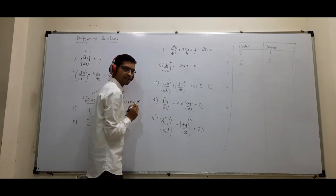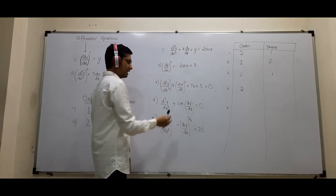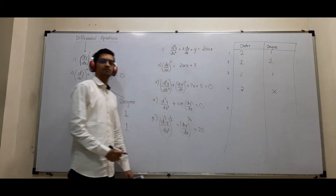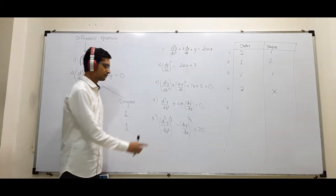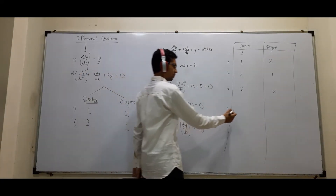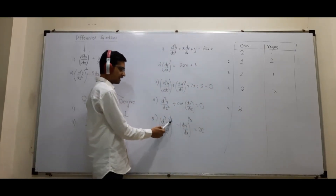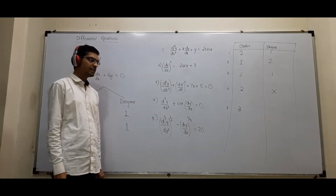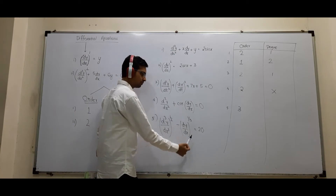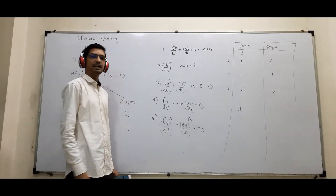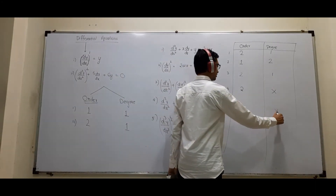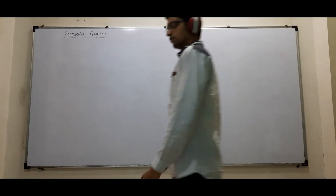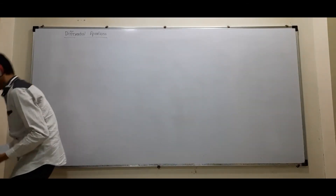In the fourth problem, the highest derivative is the second derivative so order = 2, but dy/dx is coming inside the cosine function. When a variable appears inside a transcendental function like cosine, the degree is not defined. In the fifth problem, order = 3, but the derivative terms are under a radical sign — even after squaring or cubing, dy/dx remains under the radical — so the degree is also not defined.